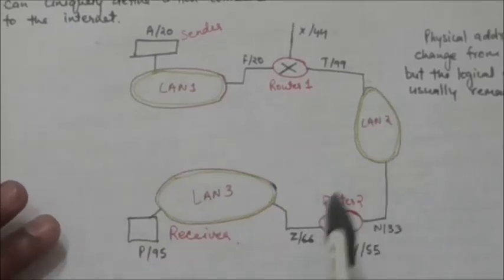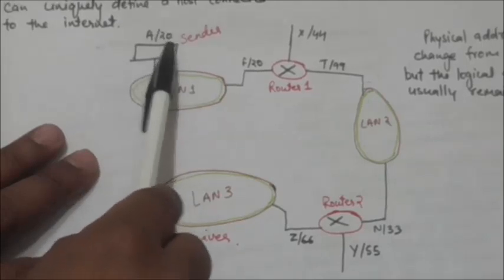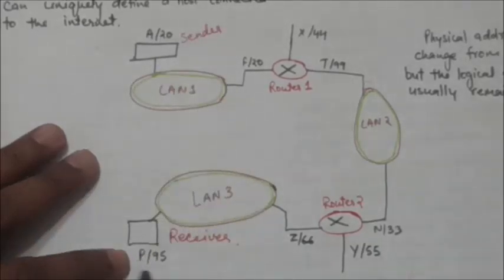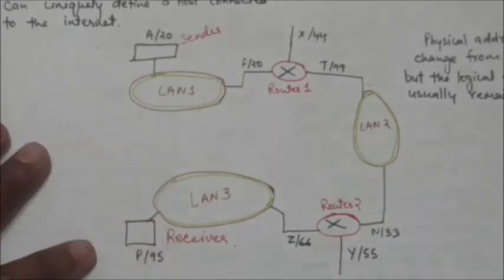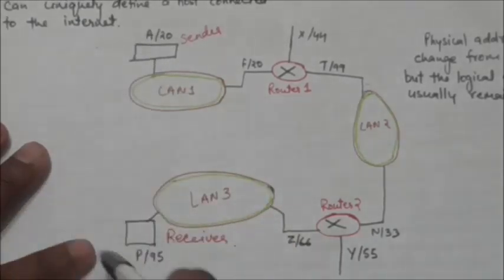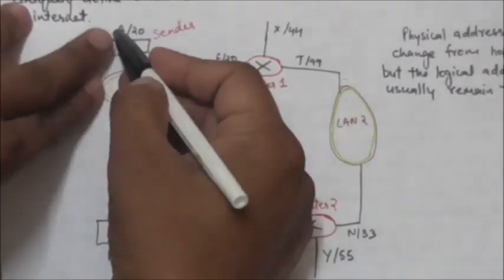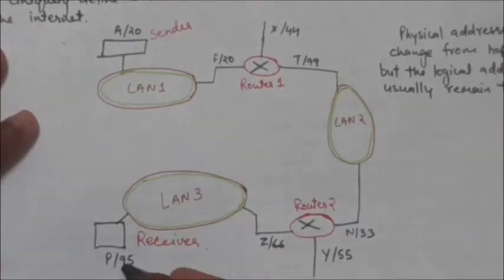Here you can see that this computer has logical address A and physical address 20, and this other computer has logical address P and physical address 95. In this example we use letters to represent logical addresses and numbers for physical addresses, though in reality both are numbers. The computer with logical address A and physical address 20 is the sender, and the computer with logical address P and physical address 95 is the receiver.